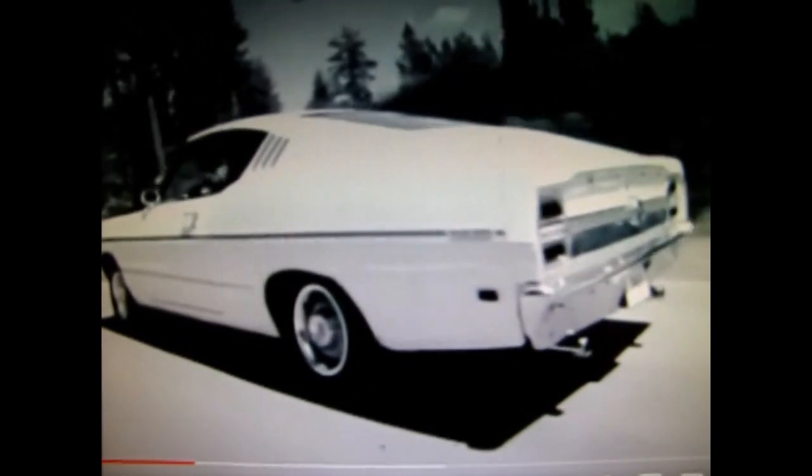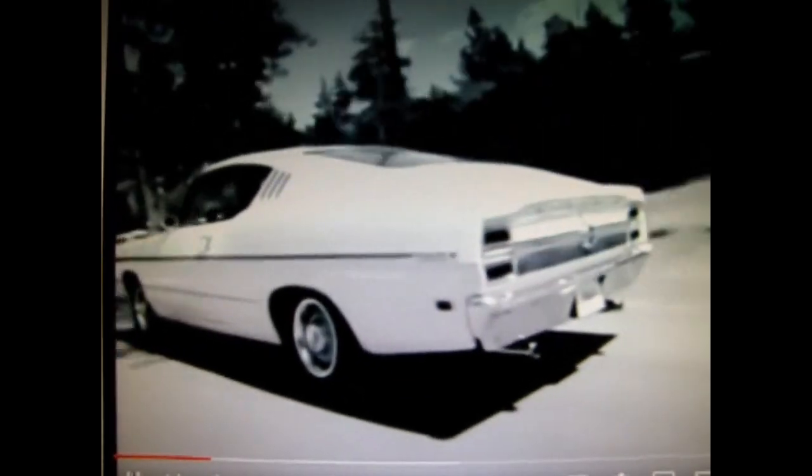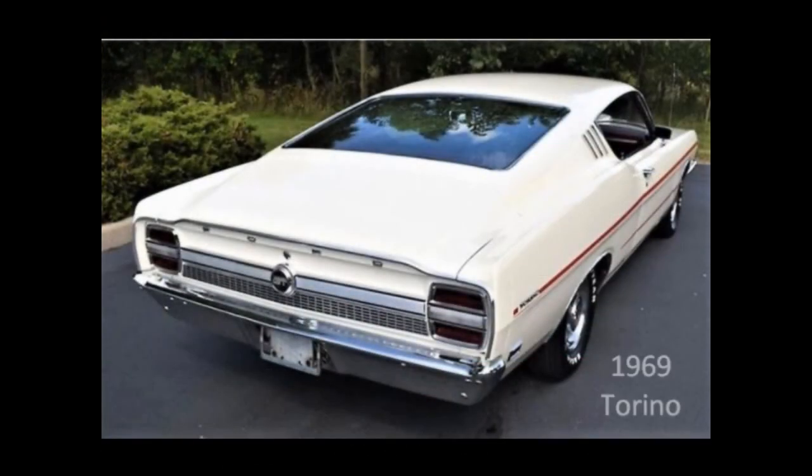For 1968, Ford redesigned its intermediate Fairlane line and introduced a new premium sub-series model, the Torino, named after the City of Turin, or Torino in Italian, considered the Italian Detroit. Just as the Ford LTD had been the upscale version of the Ford Galaxy, the Torino was initially an upscale variant of the intermediate-size Ford Fairlane. The upscale trim included a chrome grille in the lower portion of the rear taillight panel and a sporty front grille.